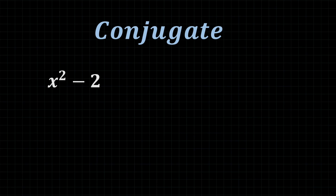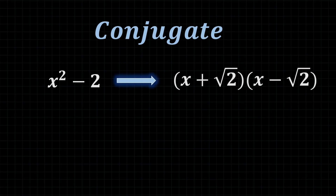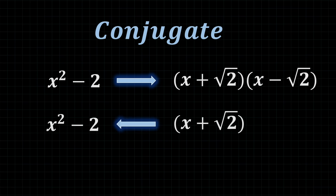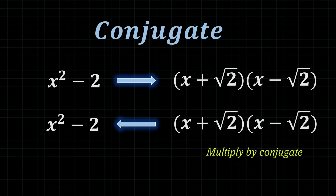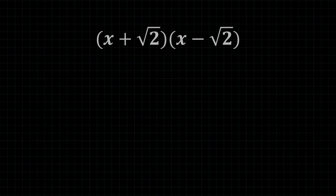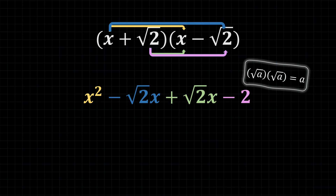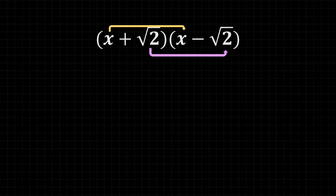Let's look at a different example: x squared minus 2. This isn't technically a difference of squares because we can't square root 2 cleanly, although we can still write the conjugate as (x plus root 2) and (x minus root 2). To turn (x plus root 2) into x squared minus 2, we multiply by its conjugate. When we have root a times root a, the answer is just a — so root 2 times root 2 equals 2. The middle terms cancel out again, so we only multiply the first terms together and the second terms together, giving us x squared minus 2.